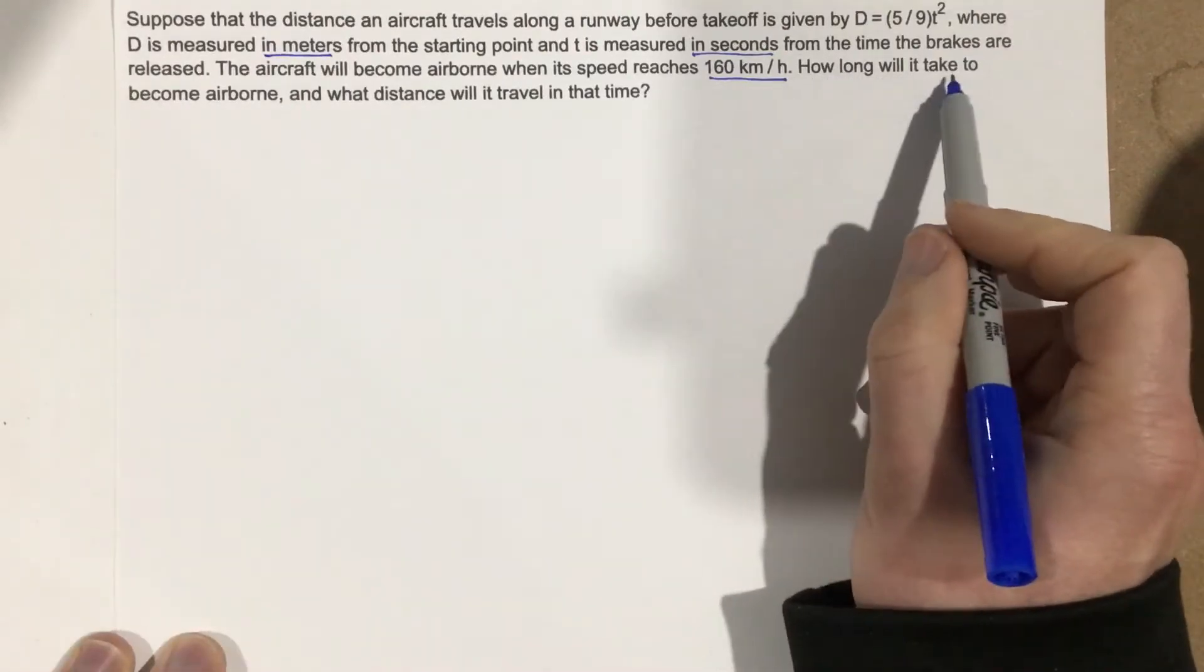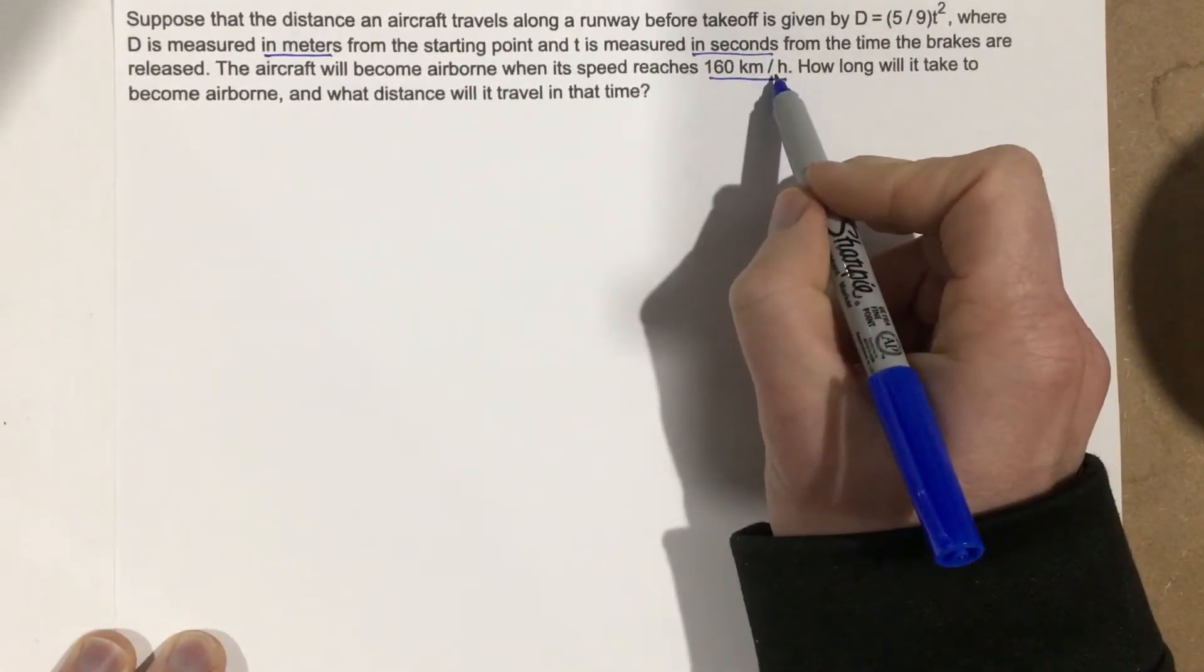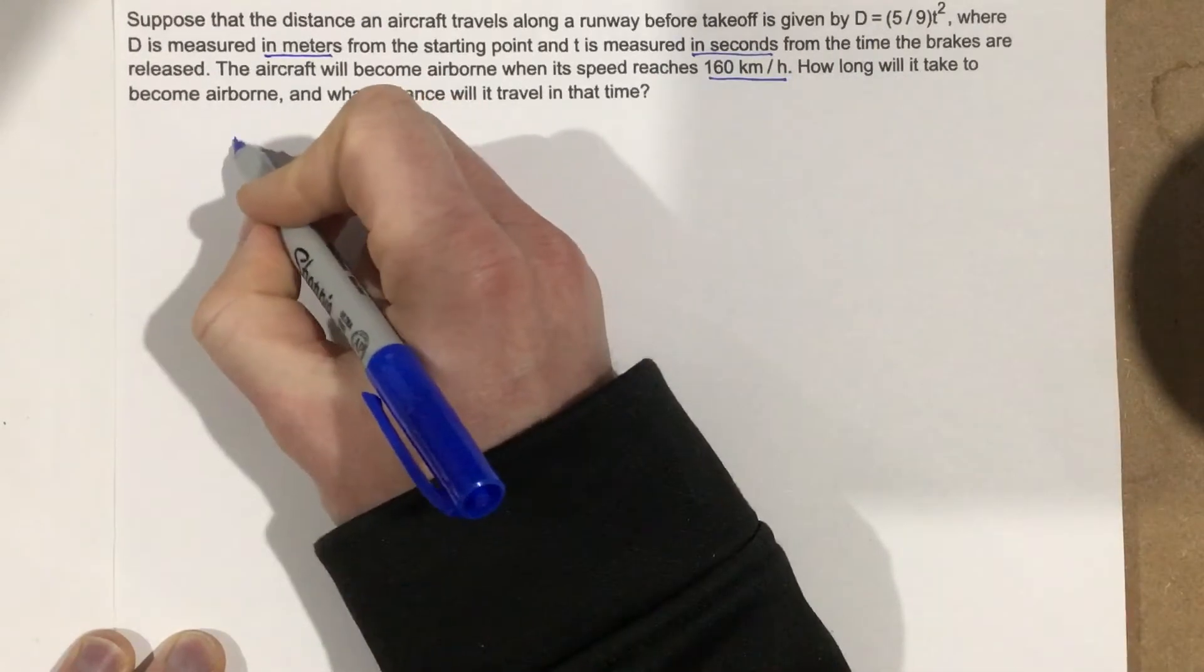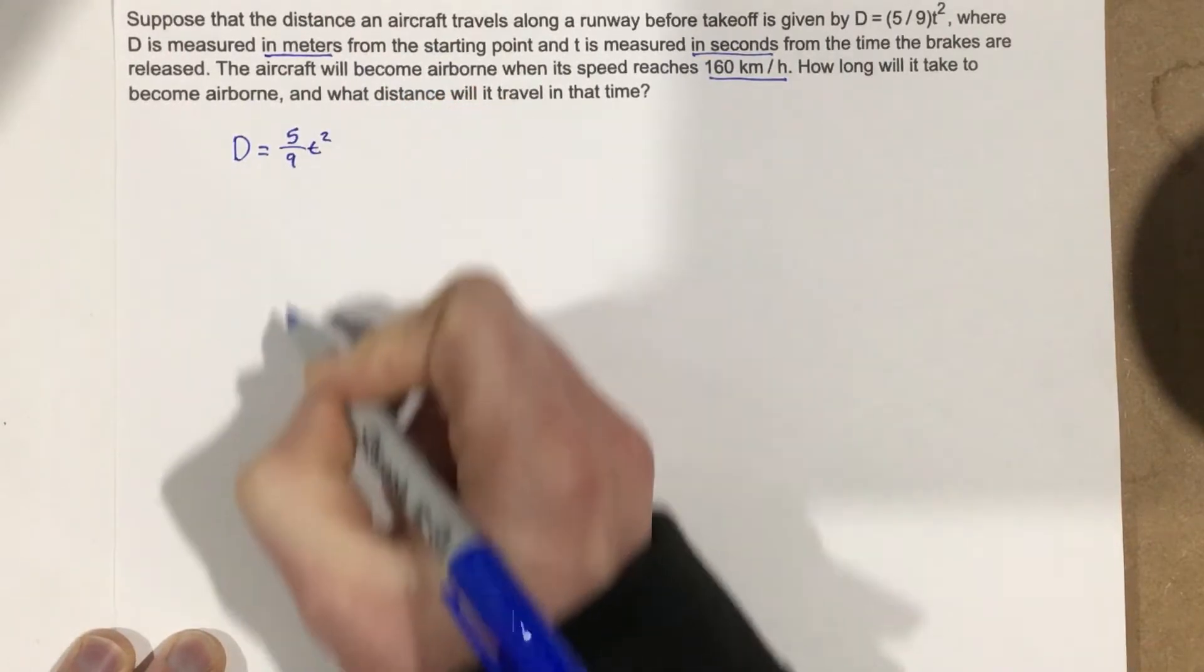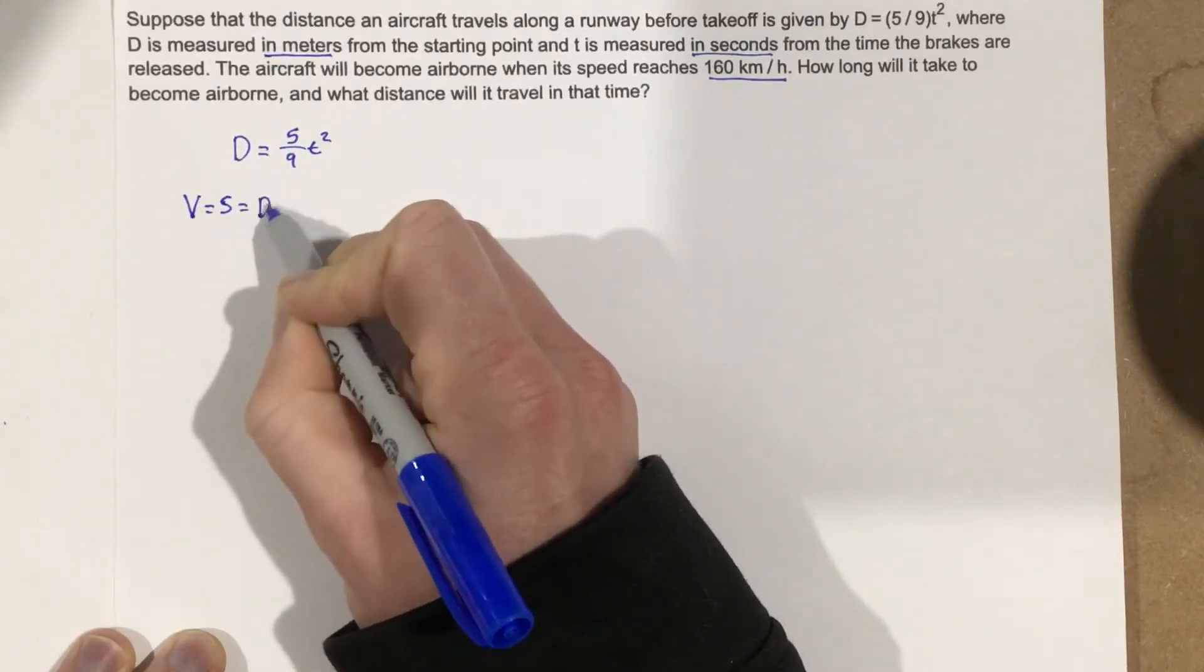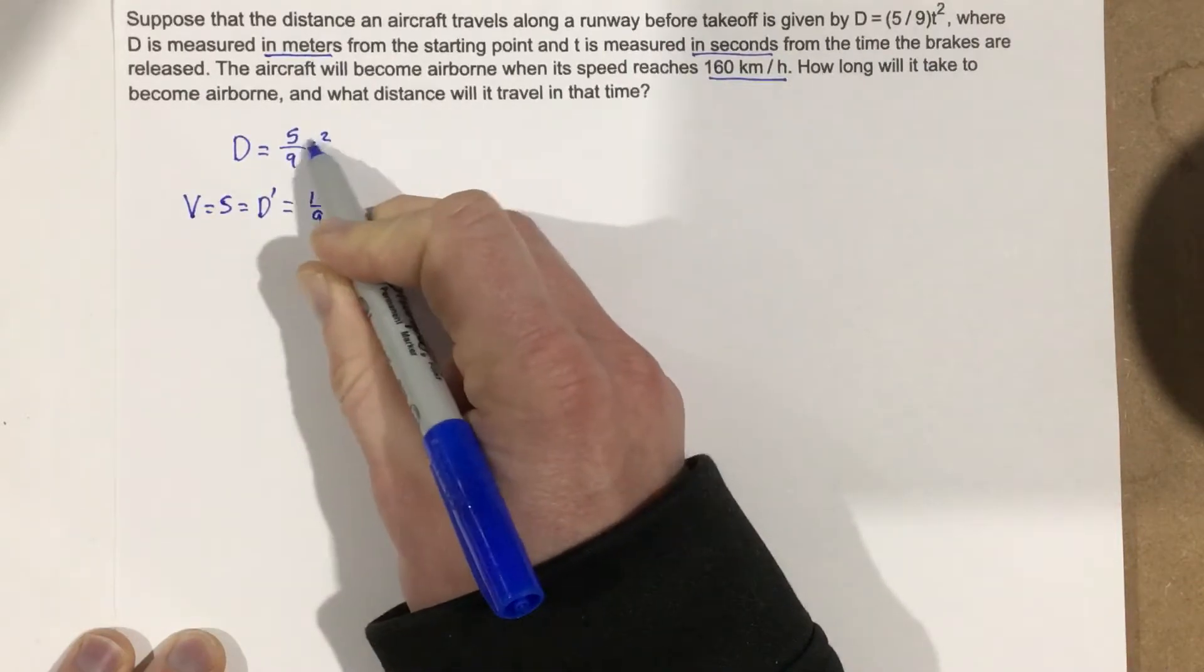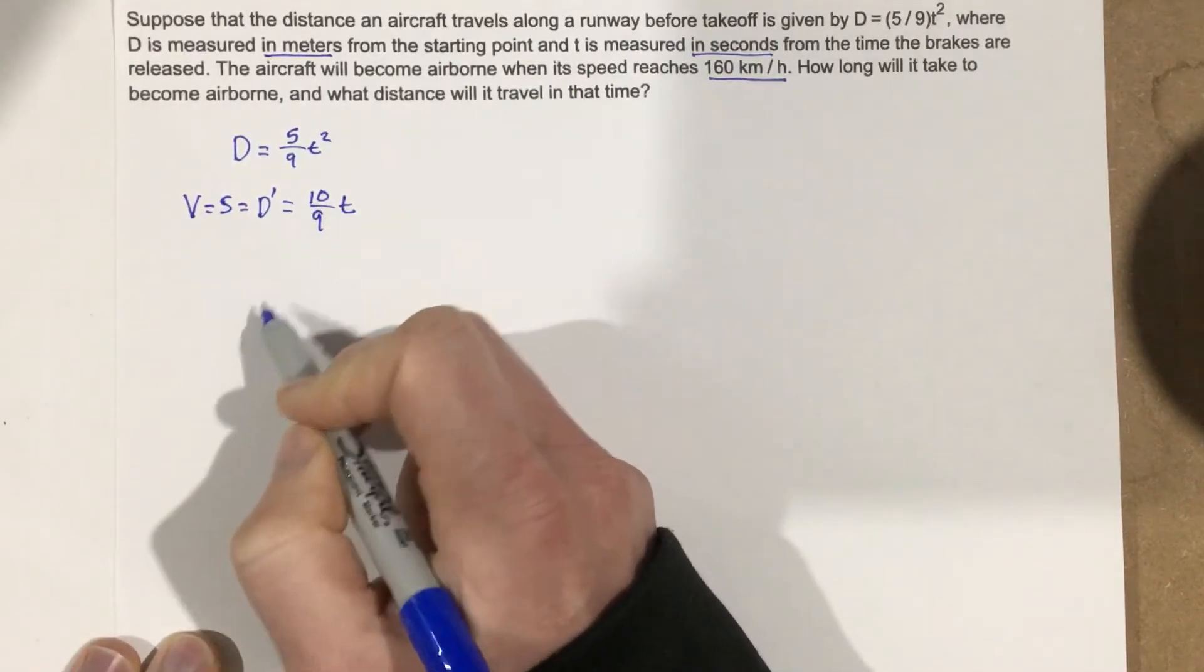So how long will it take to become airborne? Well we know that it's going to become airborne at 160 kilometers per hour, and because we're talking about a speed we need to take the distance equation, which is five ninths t squared, and we need to do the derivative of that to get the velocity or the speed here, which we're going to call d prime. And when we do that we end up with 10 over 9t. Bring the two to the front, subtract one. So this is the velocity equation or the speed equation.